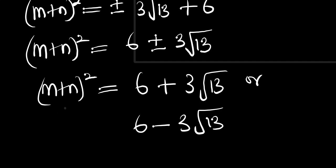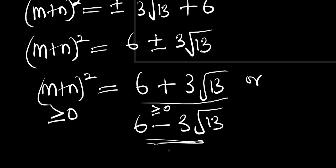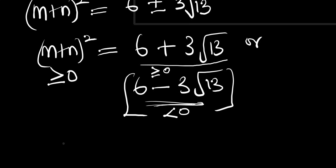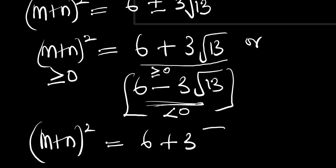Now, (m + n)² must be greater than or equal to zero. The case 6 plus 3 root 13 gives a value greater than or equal to zero, but 6 minus 3 root 13 gives a negative number. So we do not consider 6 minus 3 root 13, and the only valid case is (m + n)² equals 6 plus 3 root 13.